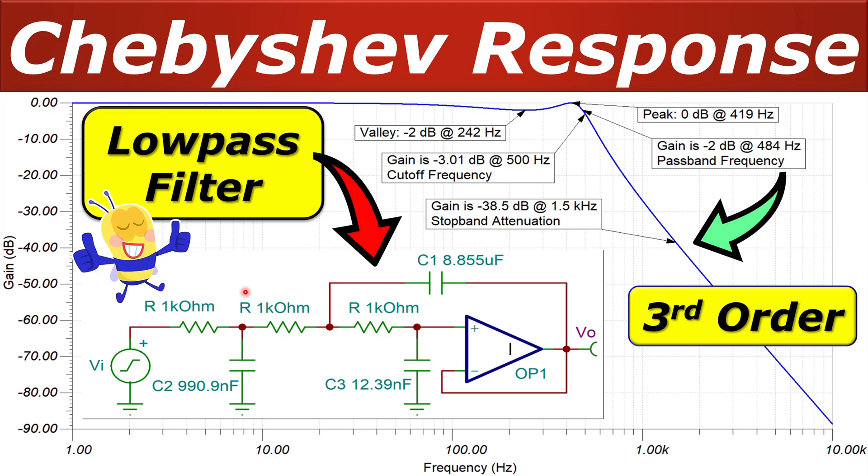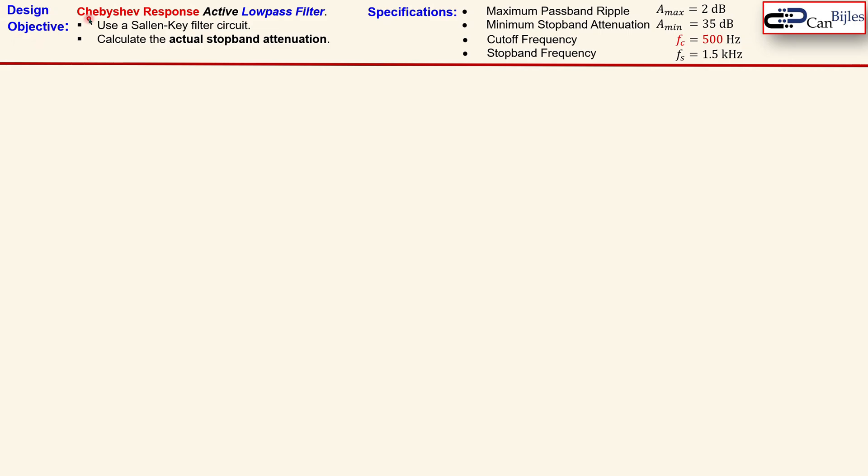Of course we will see everything step by step in our calculations and also verify these in SPICE simulations. So our design objective is shown here. We like to design a Chebyshev response. It should be an active low pass filter. We need to use a Sallen-Key filter. And also we calculate the actual stopband attenuation.